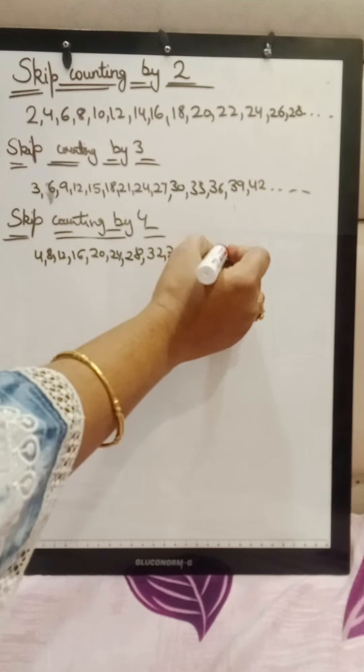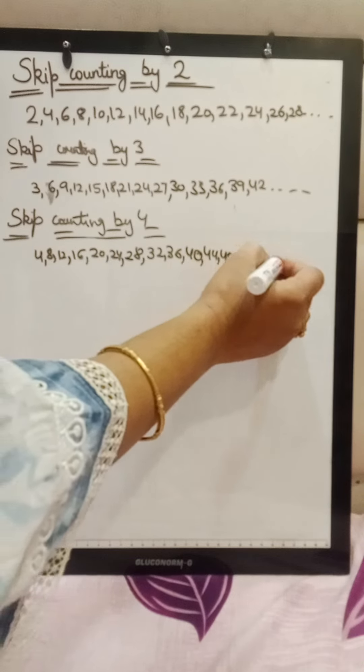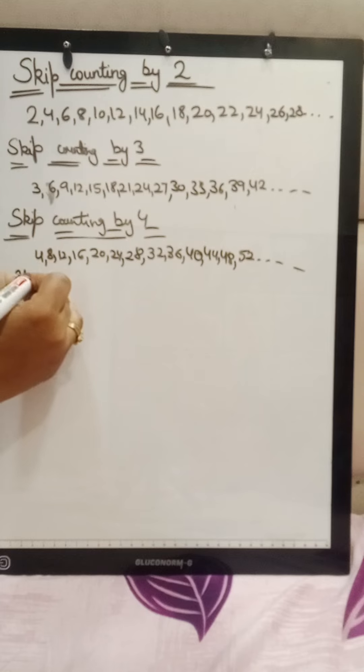40 plus 4, 44, 44 plus 4, 48, 48 plus 4, 52 and so on. So in this way you will keep adding 4, then that will become skip counting by 4. Basically we have to keep adding that same number.